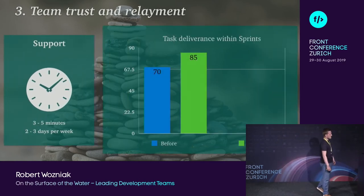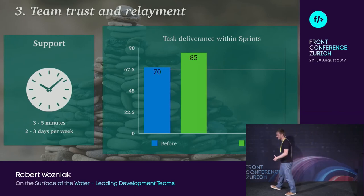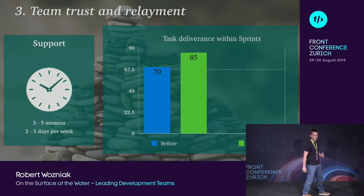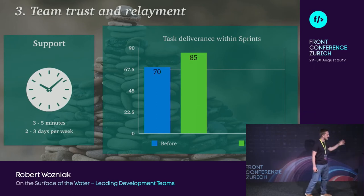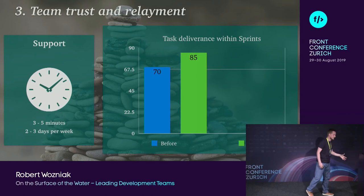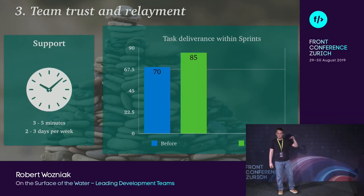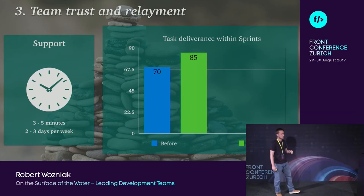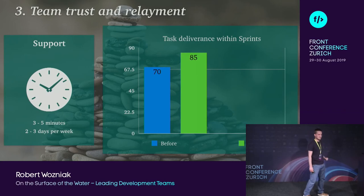I conducted a little experiment when leading one of my teams. Before I started applying the support method, I measured task delivery within two-week sprints — it was 70%. Surprisingly, when I started applying support, it went through the roof and jumped by 15%, suddenly hitting 85% task delivery within sprints. The contact and showing that you care about your team can have a real effect.